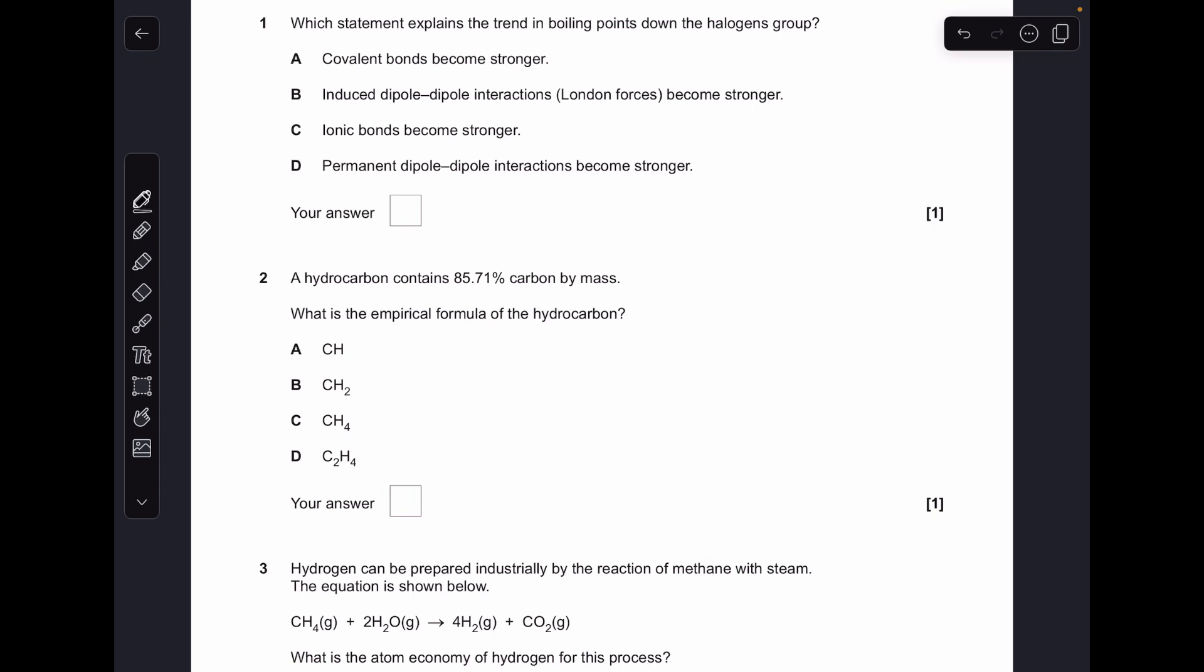Nice easy one to start with. The trend in boiling points down the halogens is explained by the increasing strength of the induced dipole-dipole interactions, or London forces, so that was option B.